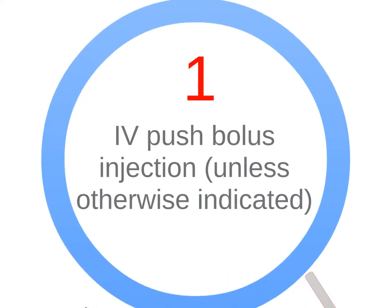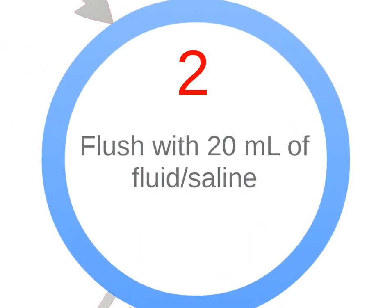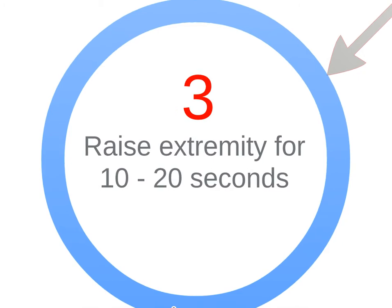If a drug is given via peripheral route of administration, use an IV push bolus injection, flush with 20 milliliters of fluid or saline, and raise the extremity for 10 to 20 seconds to enhance delivery of drug to circulation.